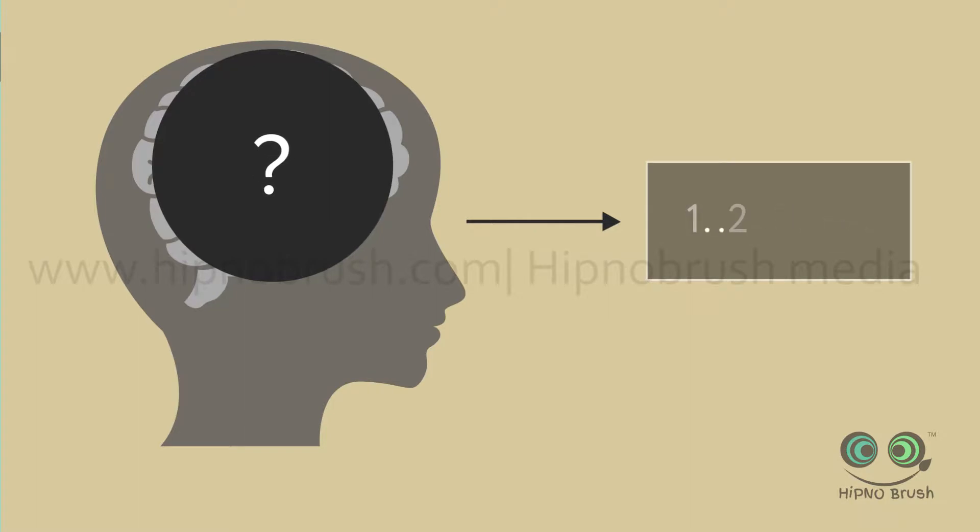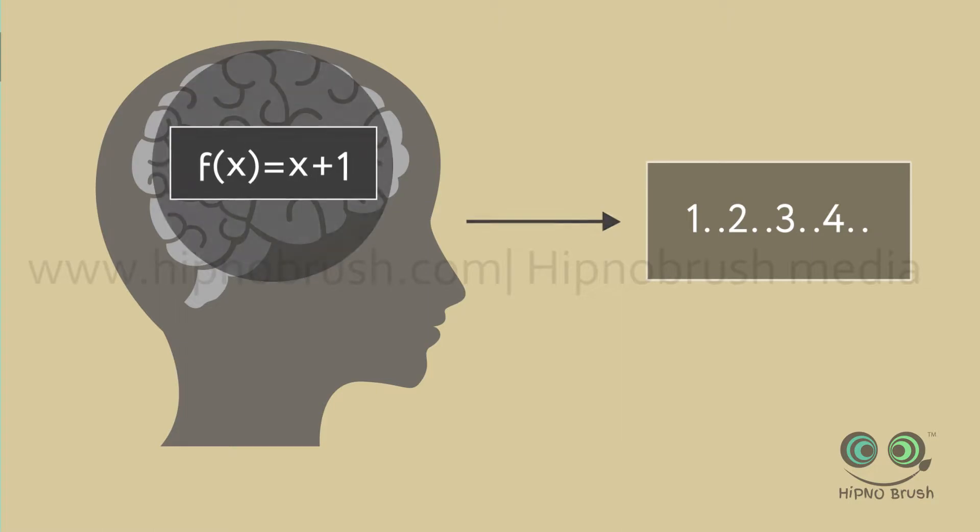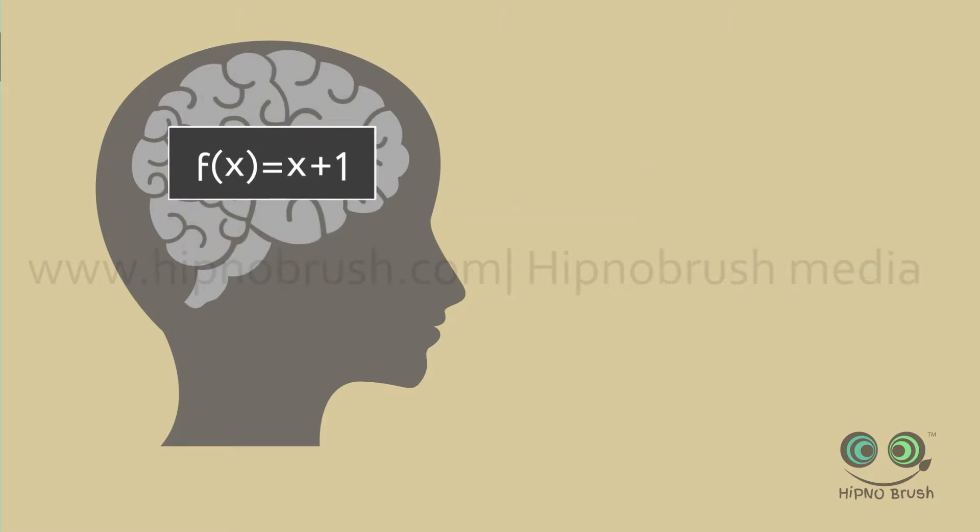For example, if a sequence of events can be encoded by a short algorithm, then a mind can understand and compress that sequence even if it appears random to traditional statistical tools.